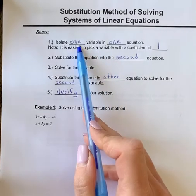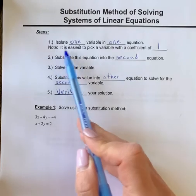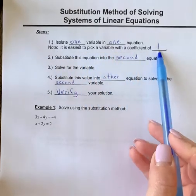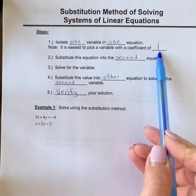Isolate one of the variables in one of the equations. Note it's always easiest to pick a variable with a coefficient of one. We're going to strategize to make the work easy to substitute with.